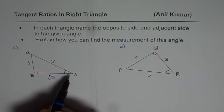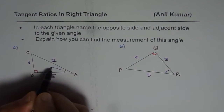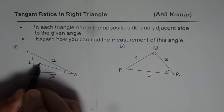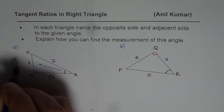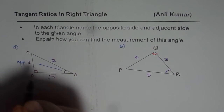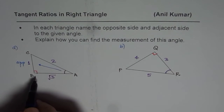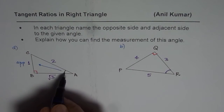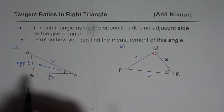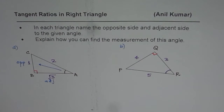If you see from angle A, the side opposite is this side — that is the opposite side to angle A. The adjacent side is the side which is between the angle and 90 degrees. So this is called the adjacent side.